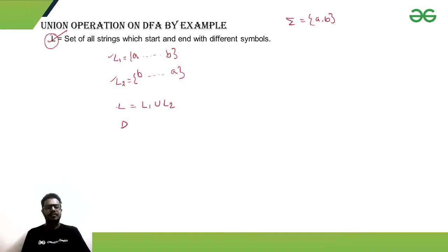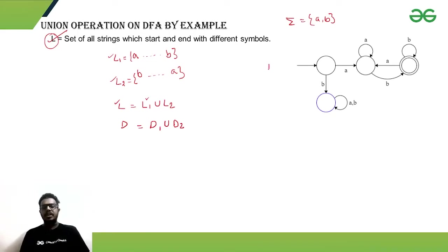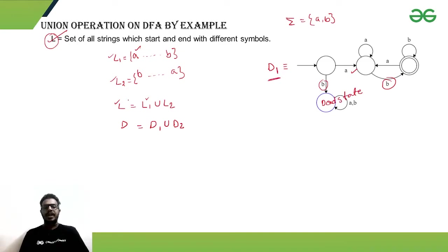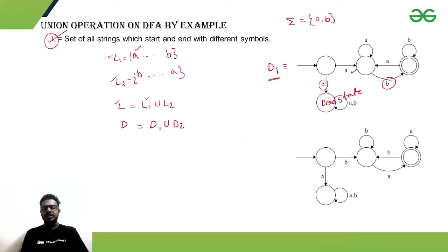Now let's look at the DFA D1 corresponding to language L1. In D1, if the string is starting with A, it will look for the ending symbol B. If the string is starting with B, it goes to a dead state. So D1 is the DFA for language L1 where strings start with A and end with B.